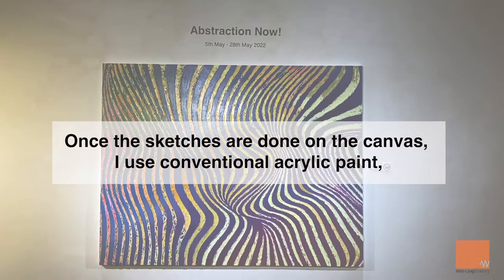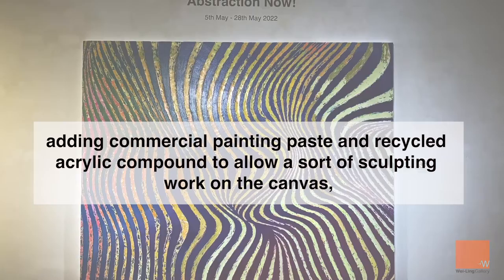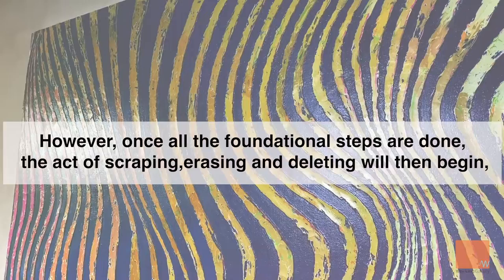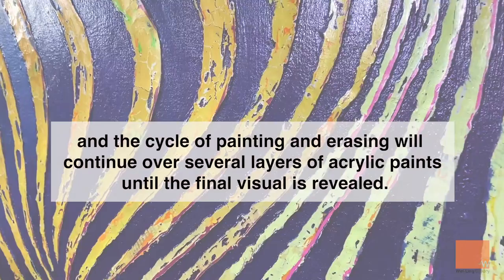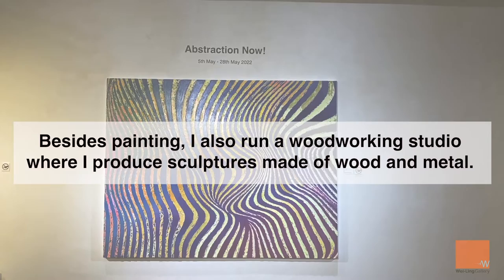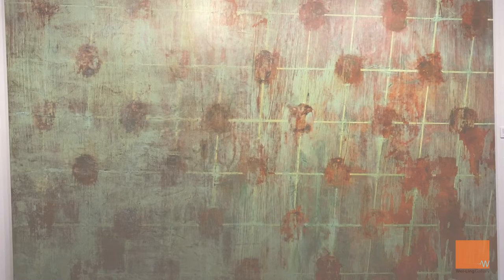Coming back to abstraction — the paintings are straightforward in terms of techniques. One of the sketches is done on the canvas; I use conventional acrylic paint, adding commercial painting paste and recycled acrylic compound to allow a sort of sculpting work on the canvas. Once all the foundation steps are done, the act of scraping, erasing, and deleting begins, and the cycle of painting and erasing continues over several layers until the final visual is revealed. Beside painting, I also run a woodworking studio where I produce sculptures made of wood and metal, concurrently working on wood sculpture and painting.